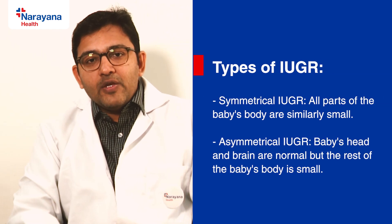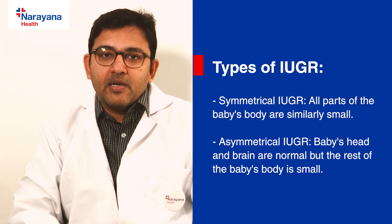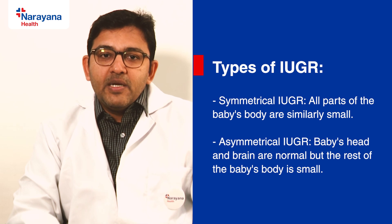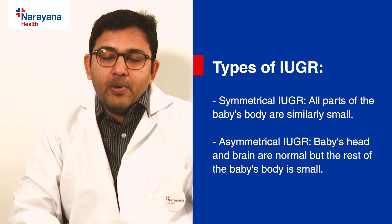There are two types of IUGR: symmetrical IUGR and asymmetrical IUGR. Symmetrical IUGR means the baby as a whole, constitutionally, is having low growth — the head, the fetal bones, the abdominal girth, everything remains below par for the gestational period.